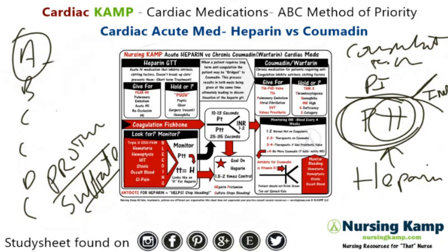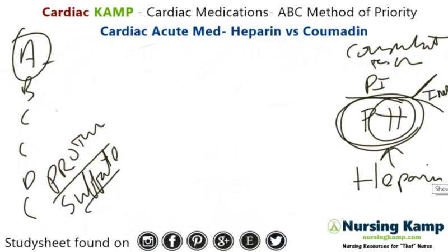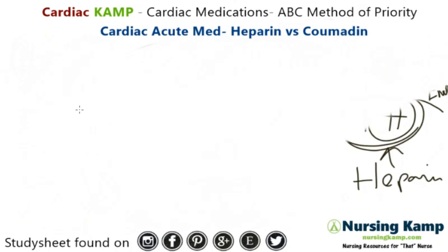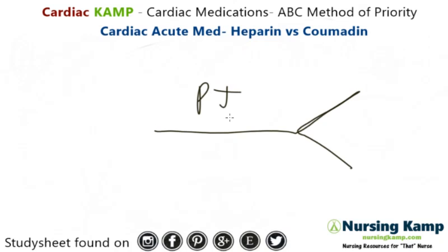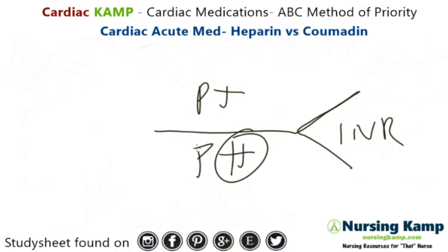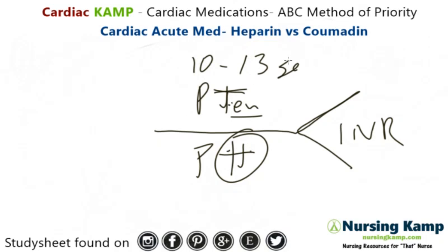Let's go into the coagulation fish bone. This is a way to look at labs. It's PT and then PTT and INR. I always think of PT as 'P10,' which equals 10. Then there are three T's — one, two, three — so 10 plus 3 is 13, giving us 10 to 13 seconds as the normal PT.